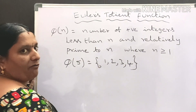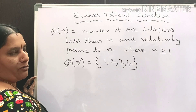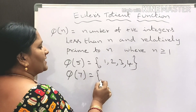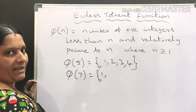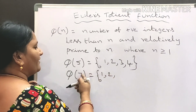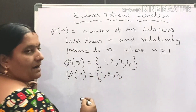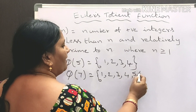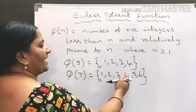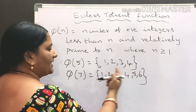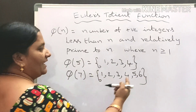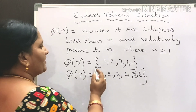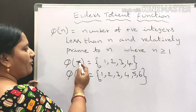GCD of 4 and 5 is equal to 1. So phi of 5 is equal to {1, 2, 3, 4}. Similarly, for phi of 7: GCD of 5 and 7 is 1, GCD of 6 and 7 is also equal to 1.